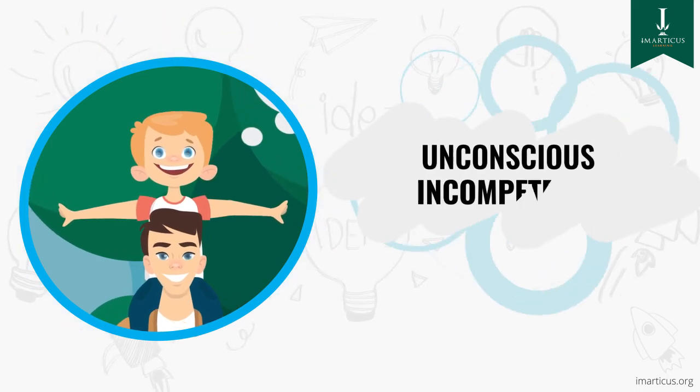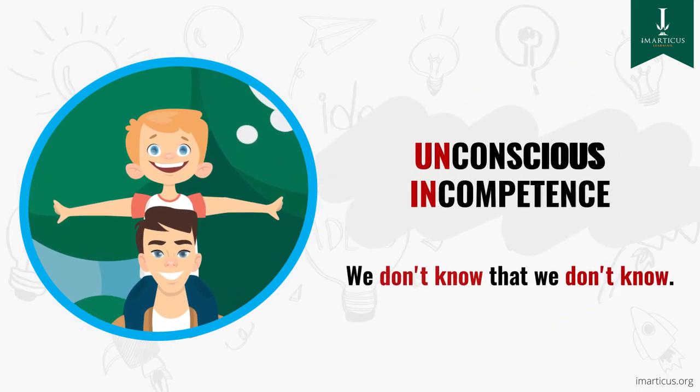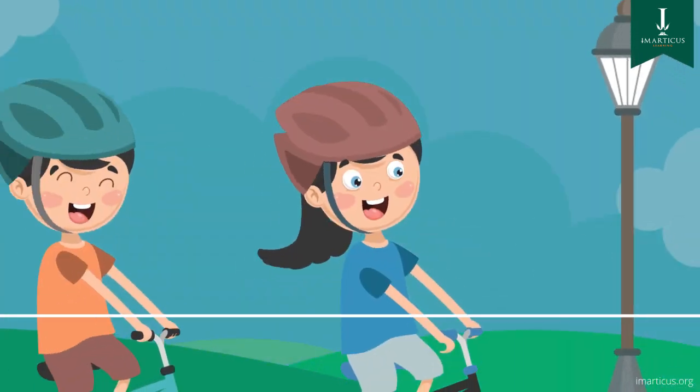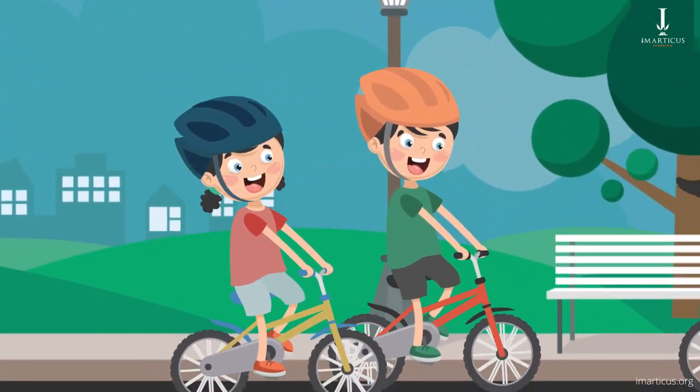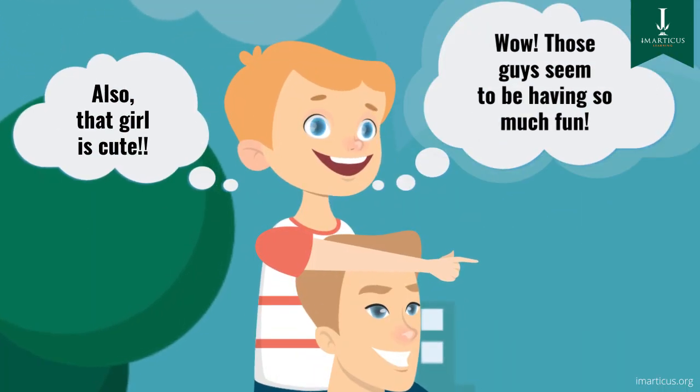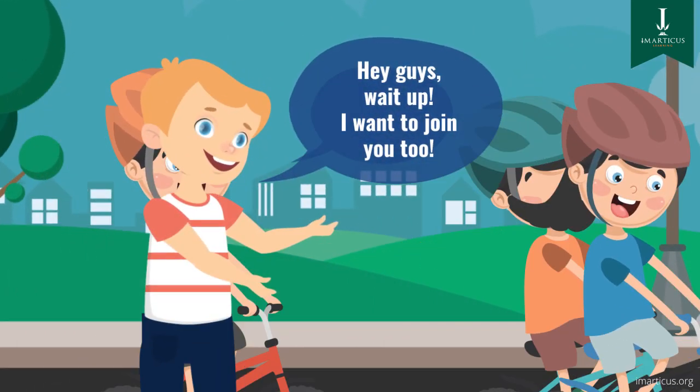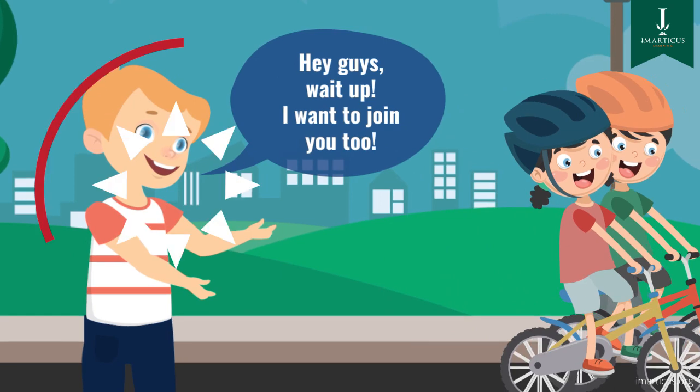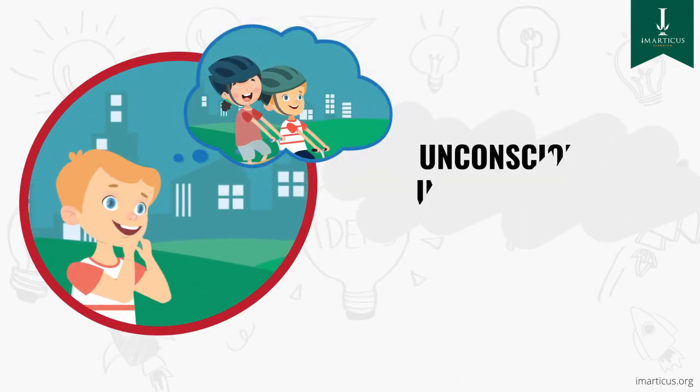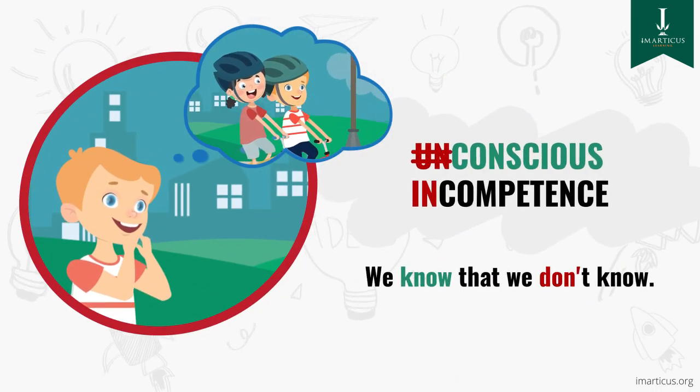the first stage of learning: unconscious incompetence. One day we notice others riding bikes and see how much fun they're having, and we want to ride one too. And so we move to the second stage of learning: conscious incompetence.